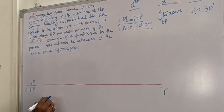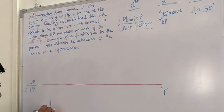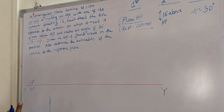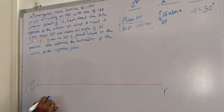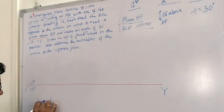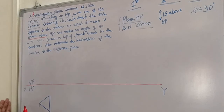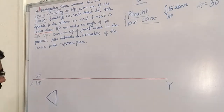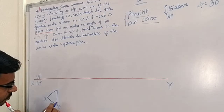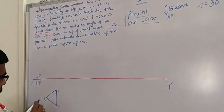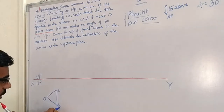First I will construct the equilateral triangle. Draw a vertical line of length 25 mm. With the help of a compass, take 25 mm and from this corner draw an arc. Then with the help of the other corner, draw one more arc which cuts the previous arc. Join the points and you will get the equilateral triangle. The resting corner is on the left side. I will name the corners A (the resting corner), B, and C.